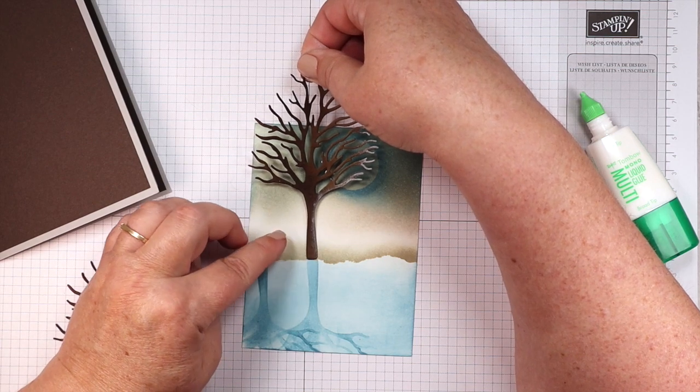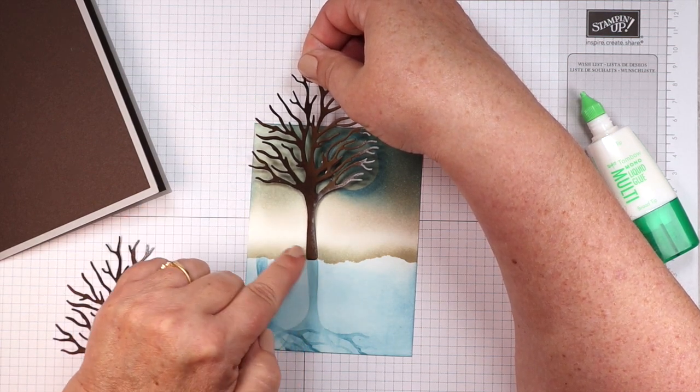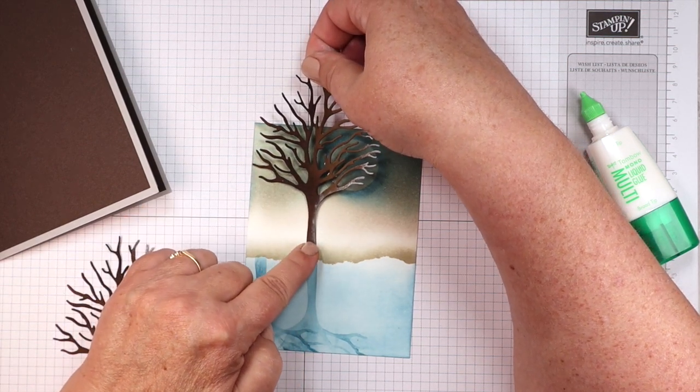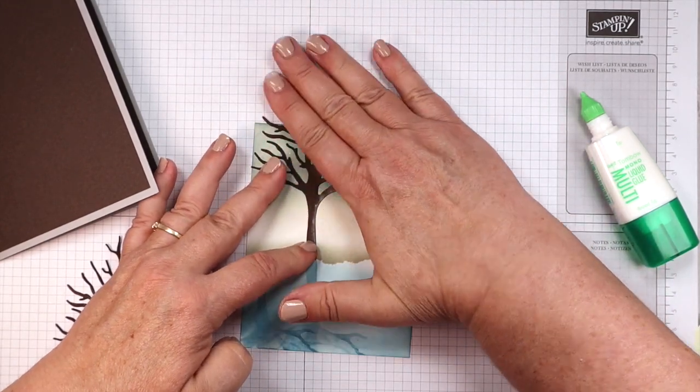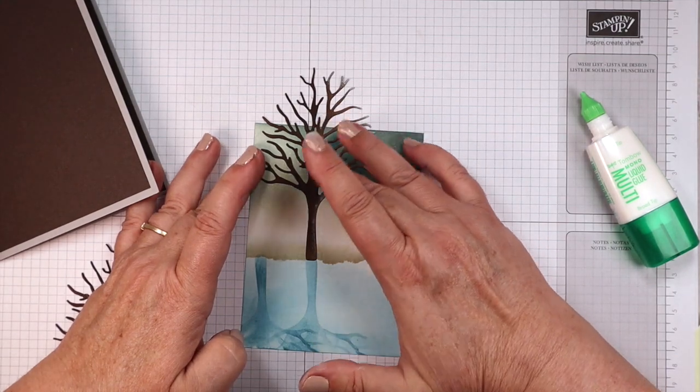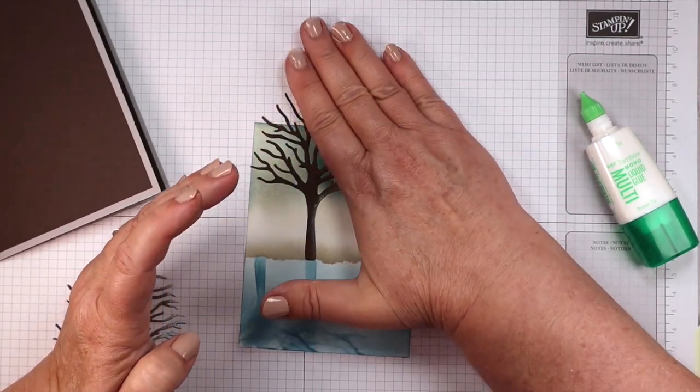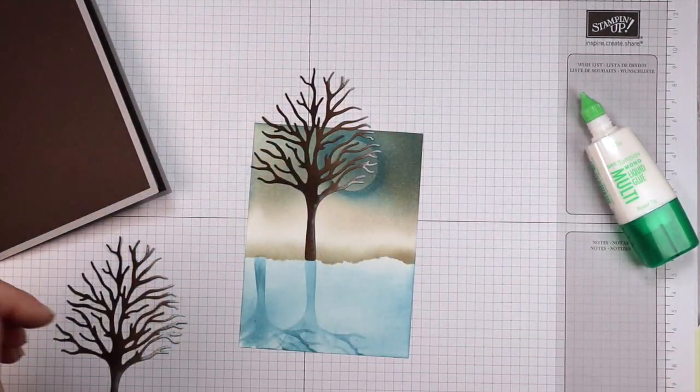And we're going to put that right at the base of that Sahara sand line, right over our shadowed trunk. I don't know why I want to call tree trunks stems for some reason this week.